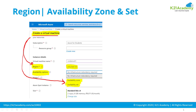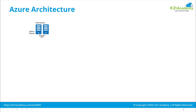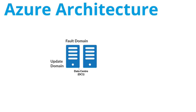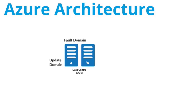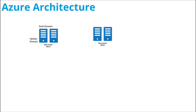When you select two machines in the same availability set, Microsoft will automatically place these two machines into two different fault domains within a data center. This protects you against a scenario where one fault domain — one rack of servers — goes down, because your second virtual machine will still be running from the second fault domain. So placing two virtual machines in a single availability set across different fault domains protects you against a problem in a server rack within the data center. This means both machines are within a single data center.